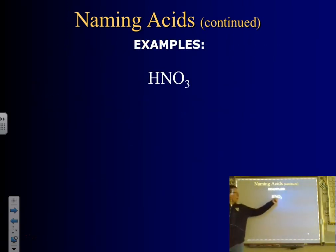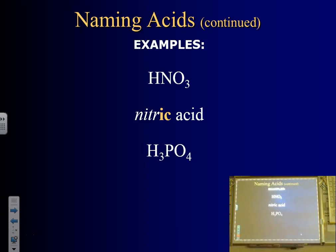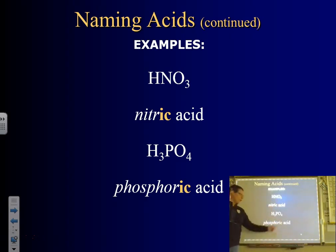What is NO3? That's nitrate. Drop the -ate and add -ic: nitric acid. Is it hydronitric? No — it is nitric acid, because if it has an oxygen, no hydro. Similarly, phosphate gives us phosphoric acid — no hydro because there's oxygen. We're just dropping the -ate and adding -ic, then 'acid' at the end.